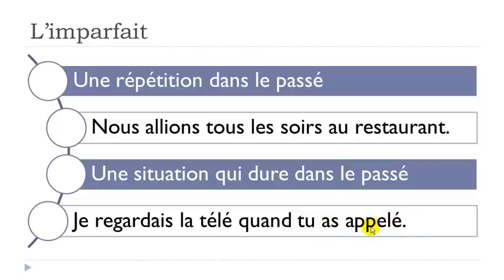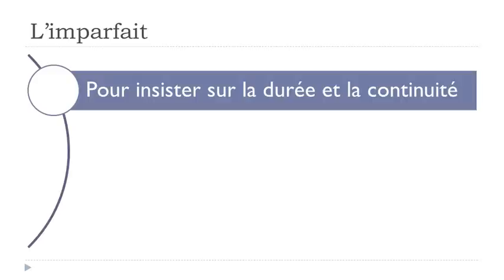So 'tu as appelé' — to call on the phone — is a short action in passé composé, while 'je regardais la télé' uses l'imparfait because it lasts longer. The full sentence: 'je regardais la télé quand tu as appelé' — I was watching TV when you called.